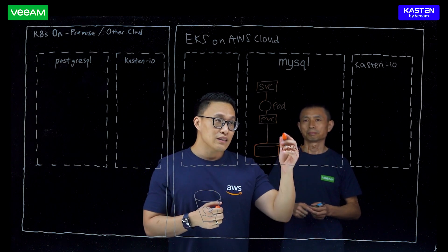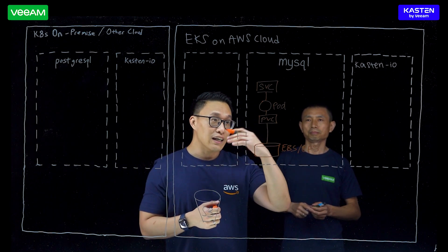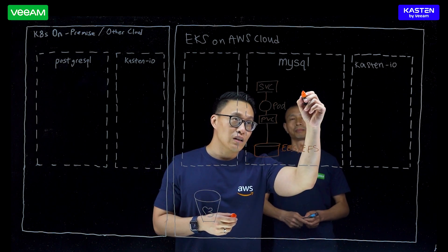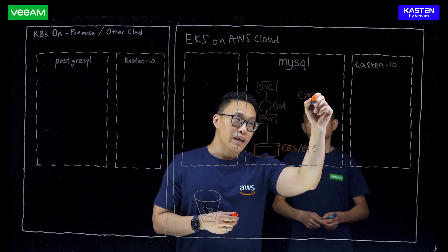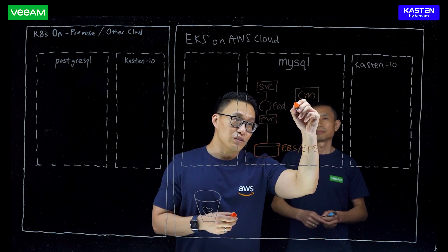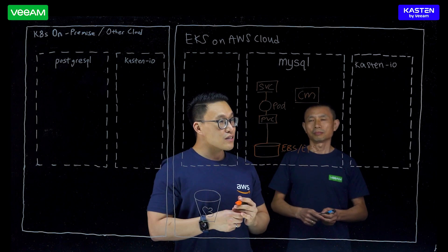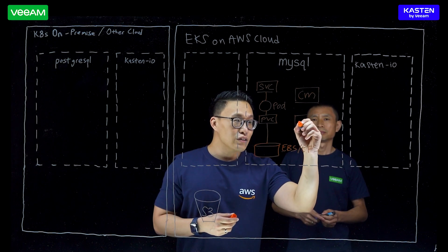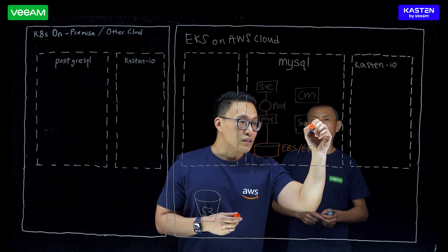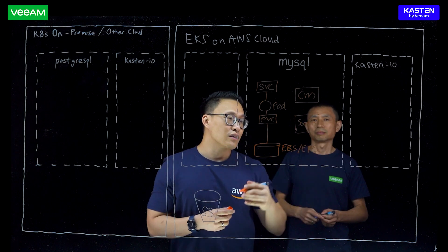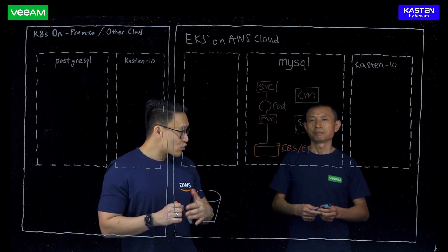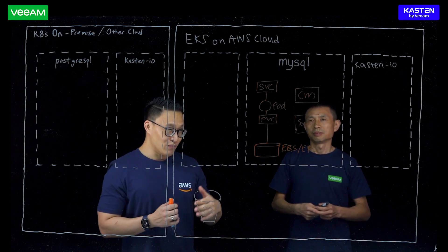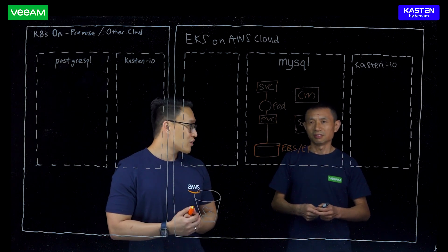Since it's Kubernetes, there are other loosely coupled components as well. You typically have what we call configmaps for your configuration strings. You also have secrets — think of them as your passwords, your encryption keys, and so on and so forth.